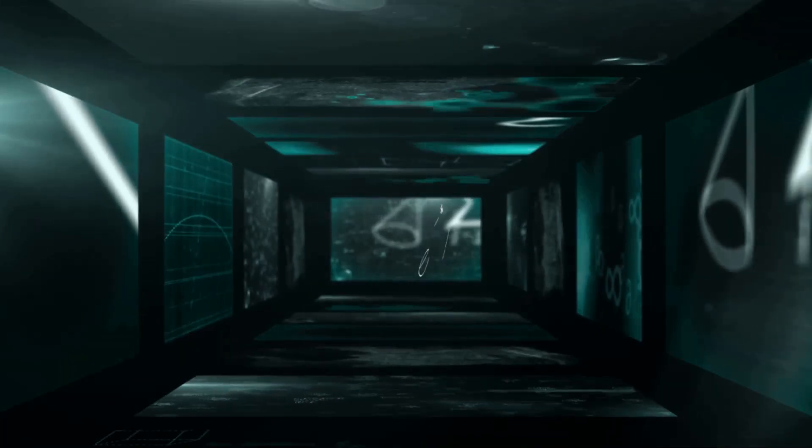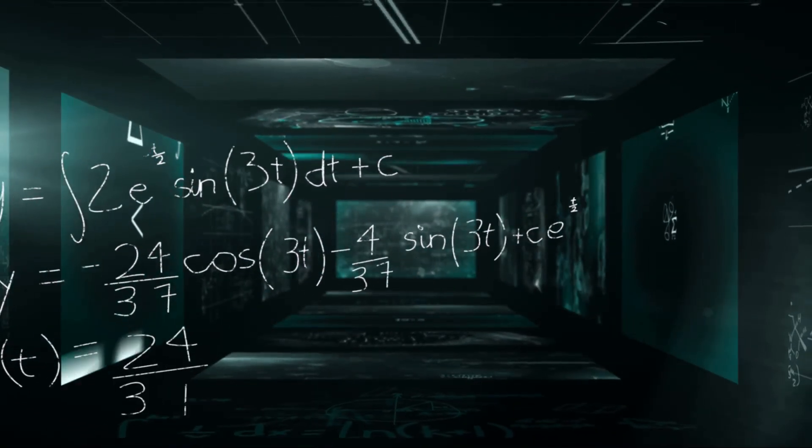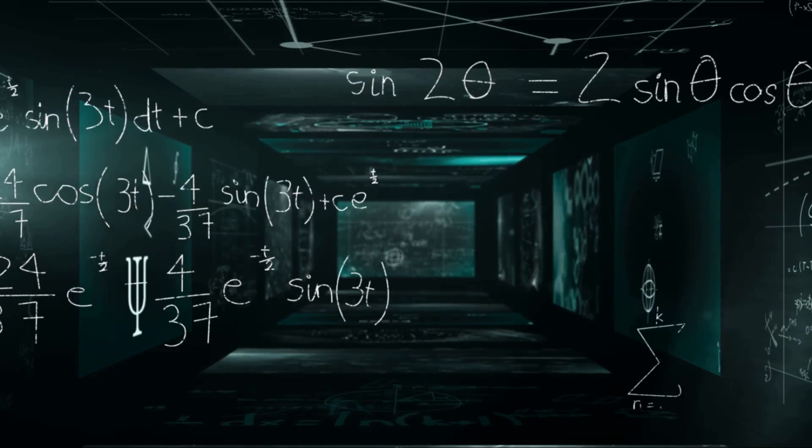Secondly, the Vlasov equation consists of three main components: the time derivative, the spatial derivative, and the velocity derivative. These terms tell us how the distribution function changes with respect to time, position, and velocity respectively.